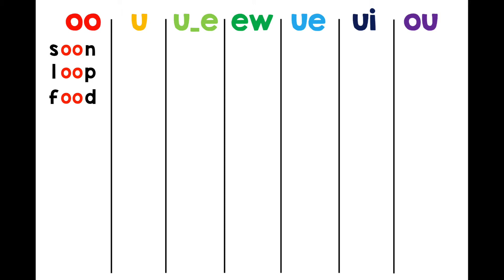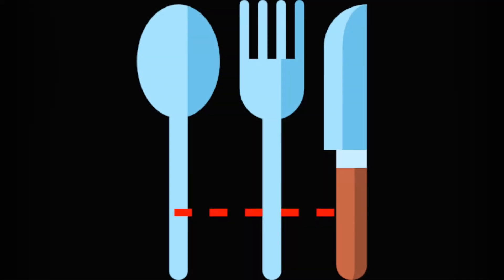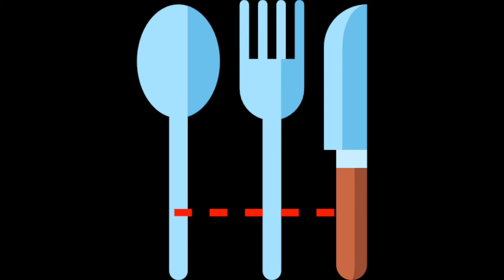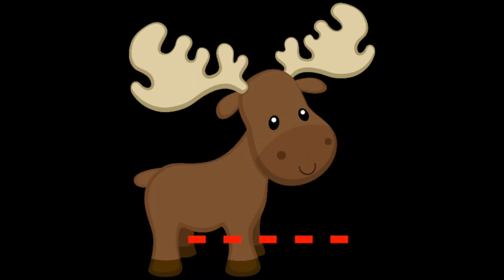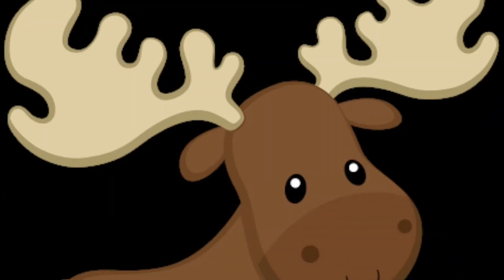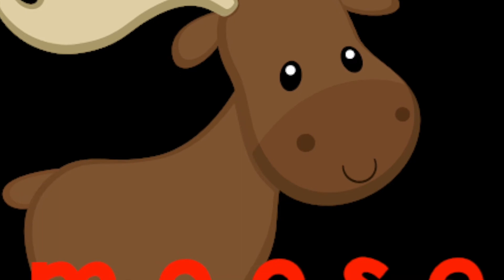Now I will show you some pictures. See if you can spell the word that matches the picture. Are you ready for round one? Spoon. I eat cereal with a spoon. Check your spelling. Did you hear the SP at the beginning? Moose. I see a moose in the forest. Check your spelling. Did you remember the silent E?